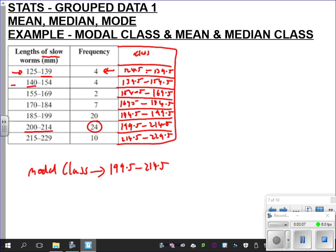How about the median class? So remember what the median is. The median is the middle value. So when you're trying to find the middle value or the median, remember it's your n over 2 number. So in other words, your n means total frequency, doesn't it?